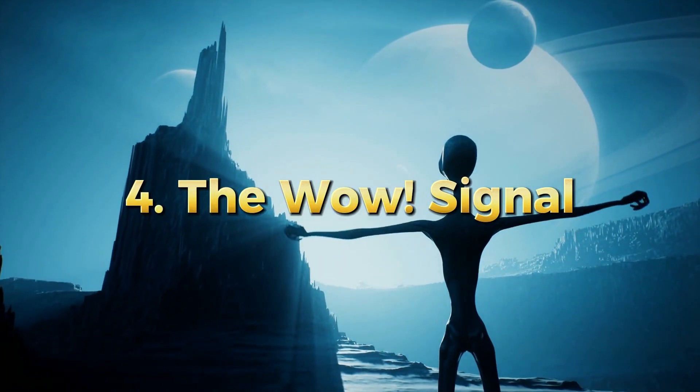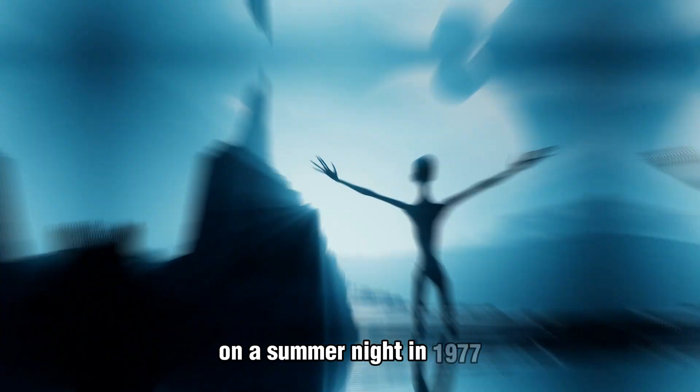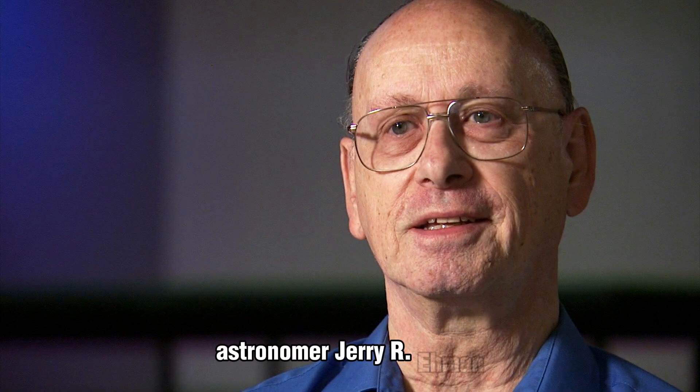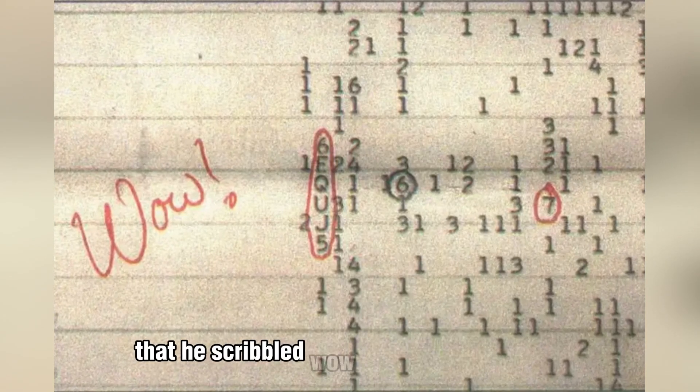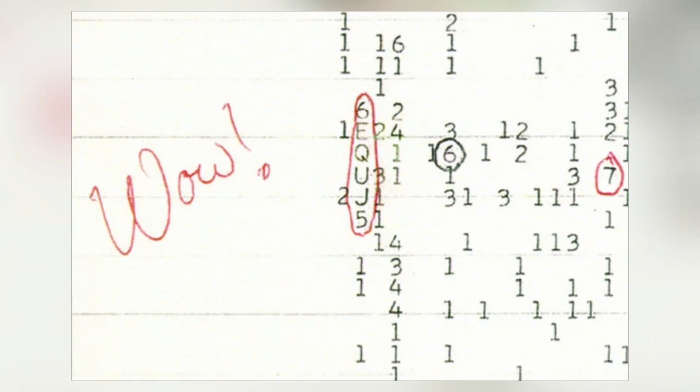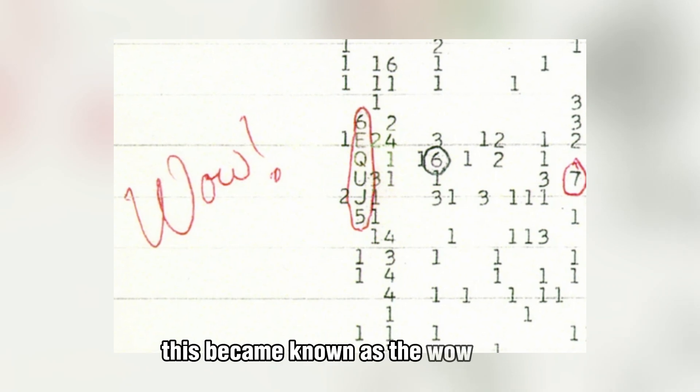The WOW Signal: On a summer night in 1977, astronomer Jerry R. Amen was scanning the skies with the Big Ear radio telescope when he stumbled upon a signal so strong and unusual that he scribbled WOW on the data printout. This became known as the WOW signal, one of the most tantalizing potential signs of extraterrestrial intelligence.